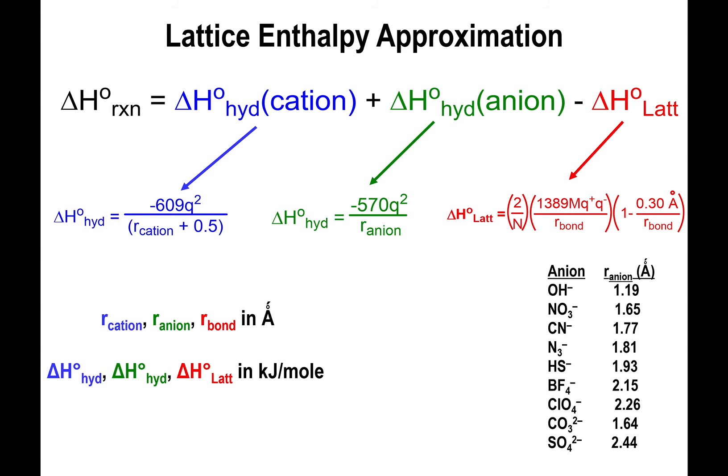You will most likely be given the ionic radii values, but be aware that there are approximated ionic radii for polyatomic anions like hydroxide, nitrate, hydrogen sulfide, perchlorate, and sulfate. We may actually use some of those to calculate whether a salt will dissolve or not. This gives us a nice way of predicting salt solubility and extends the range of salts we can evaluate beyond the simple solubility rule chart.